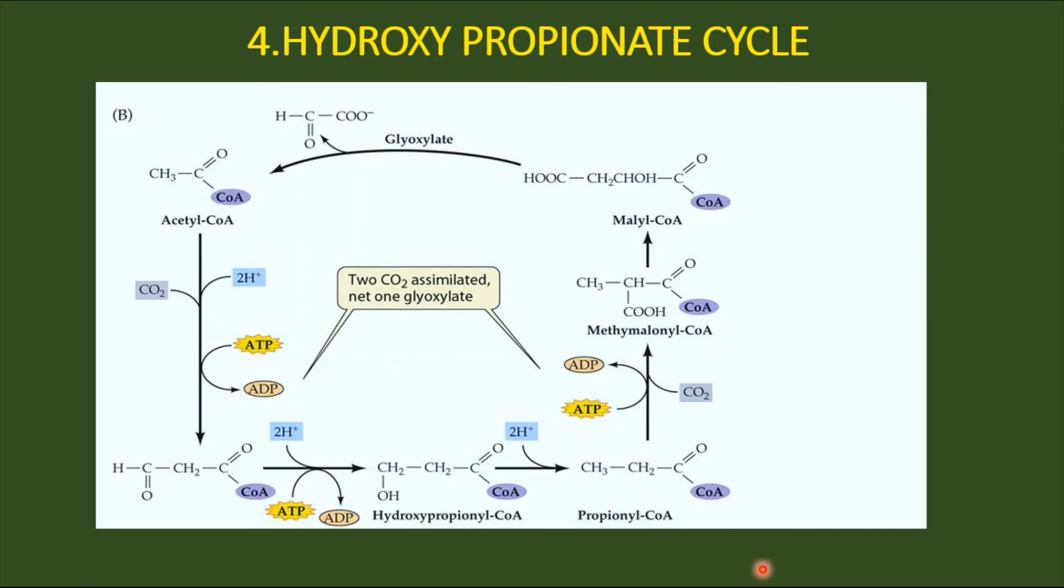This is a special note I mentioned regarding the evolutionary studies of Chloroflexus. Basically, just remember this hydroxy propionate cycle. Once again, have a glance: acetyl-CoA is getting carboxylated, giving rise to methylmalonyl-CoA. This methylmalonyl-CoA is an intermediate which is getting rearranged and giving rise to one molecule of acetyl-CoA and one molecule of glyoxylate, which will be converted to cell material.